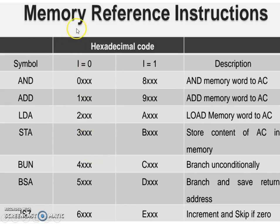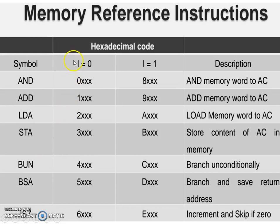The memory reference instructions include: add and load to accumulator, store to accumulator, branch unconditionally, branch and save return address, and increment and skip if zero. If i equals 0, these are the 7 direct addressing mode instructions; when i equals 1, these same 7 become indirect addressing mode instructions, totalling 14 but combined as 7.